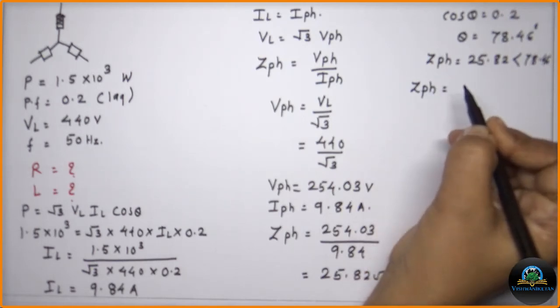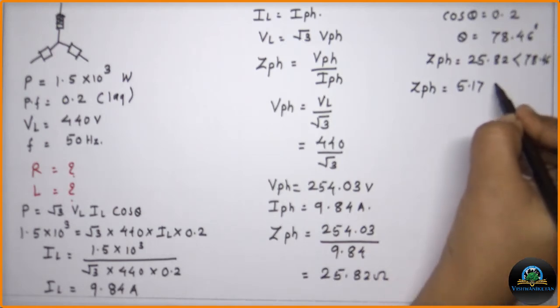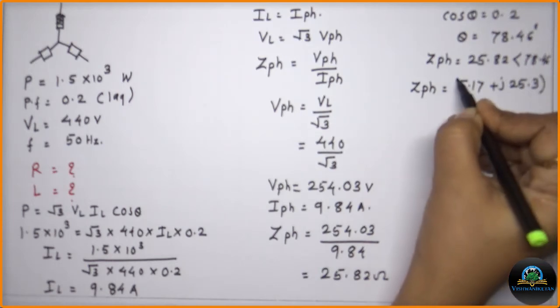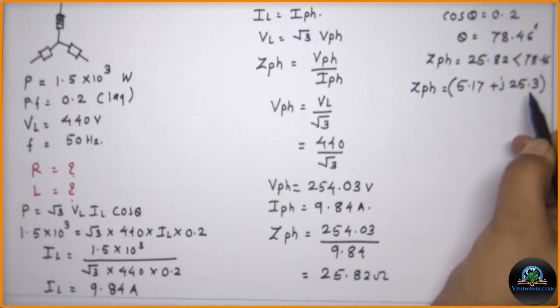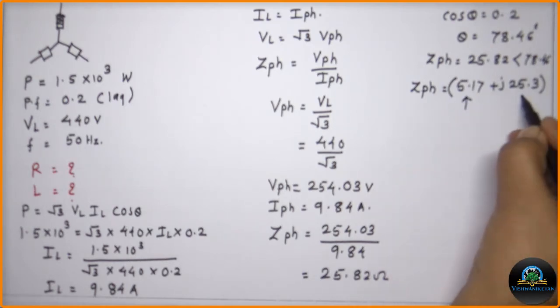Now this value if we convert into the rectangular form, we'll be getting the value as 5.17 plus j 25.3. As ZPH is nothing but the combination of the resistance and the reactance.